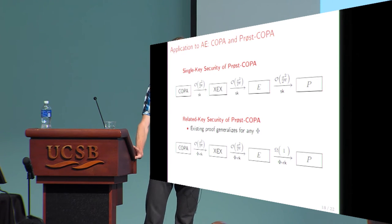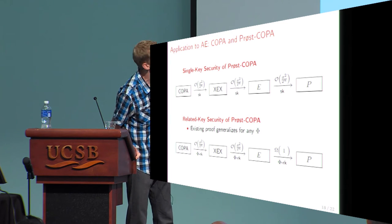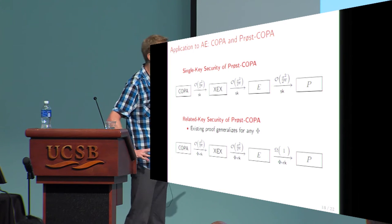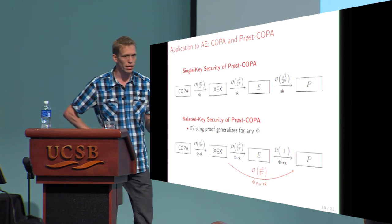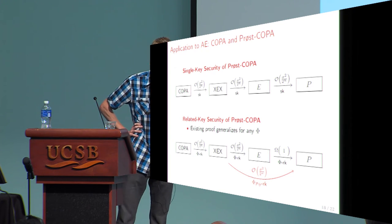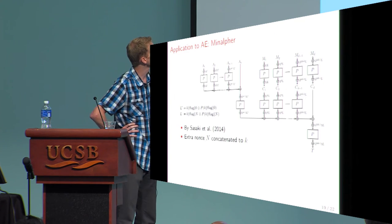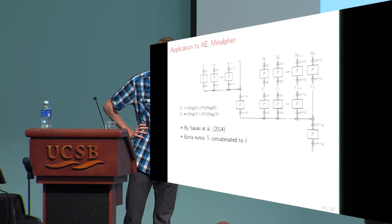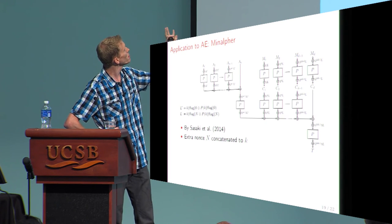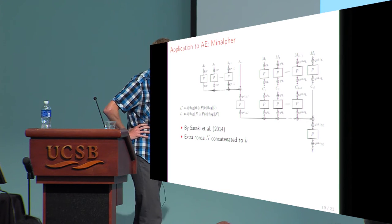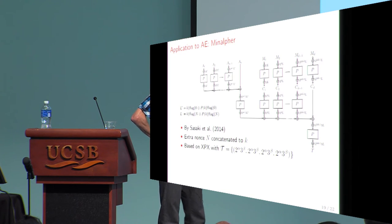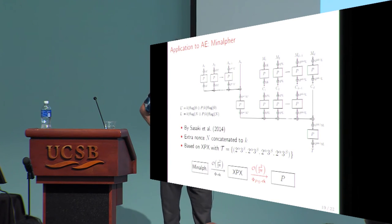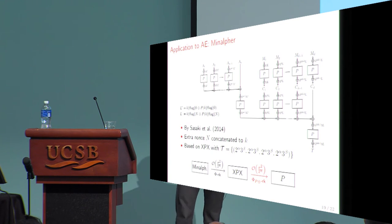We can use XPX here. Since XPX covers XEX with Even-Mansour, we skip the intermediate step through E and make a direct step to get related-key security. A similar idea can be applied to Minalpha, which uses the tweakable Even-Mansour. Minalpha can be seen as based on XPX with a quite simple tweak set, and using similar techniques, you get related-key security.